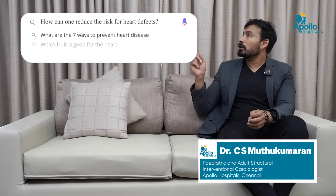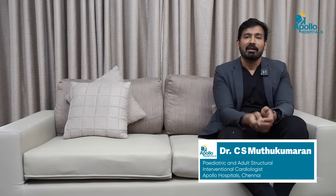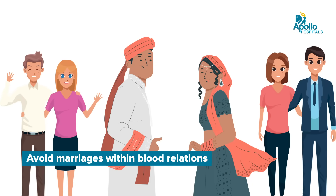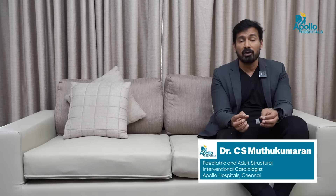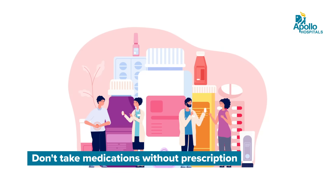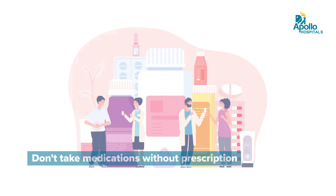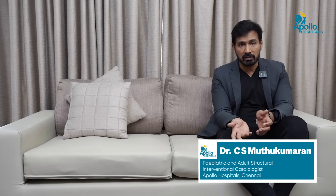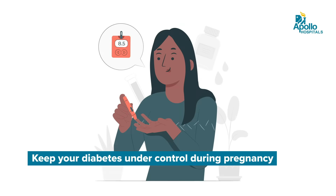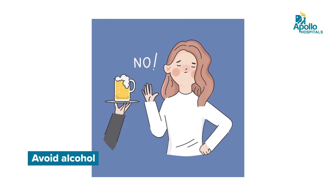How can one reduce the risk of heart defects? First, do not marry within close relationships, as birth defects — including heart defects — are more common in children born of consanguineous marriages. Second, mothers should not take any medication without a doctor's guidance, as many medications can cause heart defects. Strict diabetic control during pregnancy, avoiding smoking, and avoiding alcohol during pregnancy are also essential preventive measures.